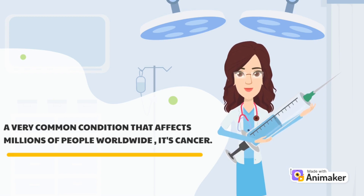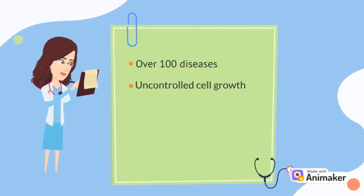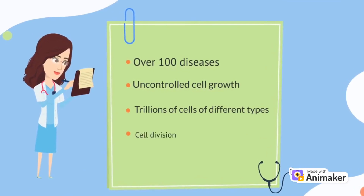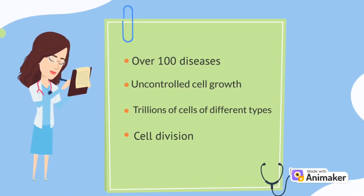In fact, cancer is a group of over 100 diseases caused by uncontrolled cell growth. Your body is made up of trillions of cells of different types. These cells are constantly working, dying, and being replaced through the process called cell division, where the cells make copies of themselves.